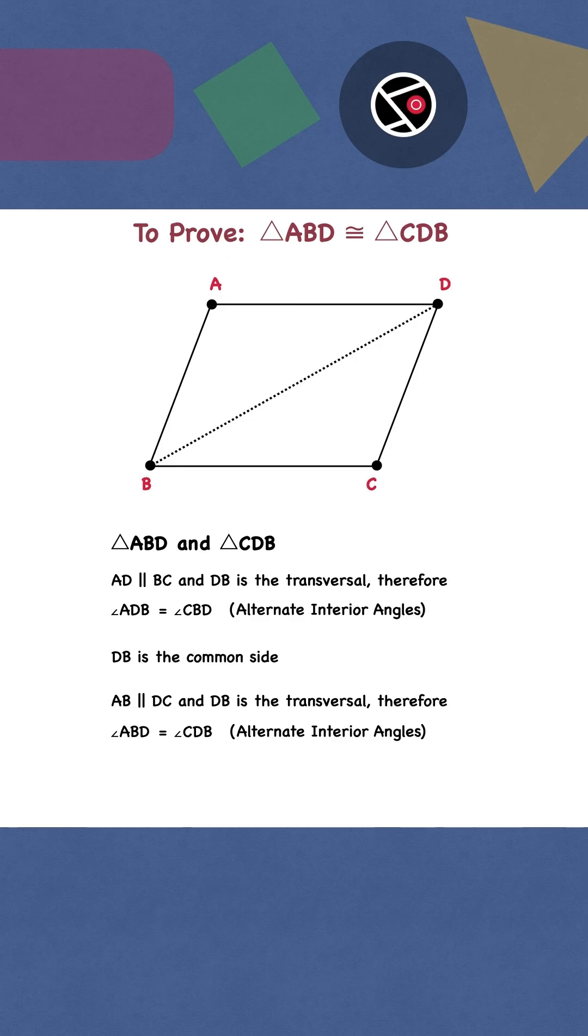We have two pairs of equal angles and the included sides are also congruent. Therefore, by ASA criterion for congruency, triangle ABD is congruent to triangle CDB. We are done.